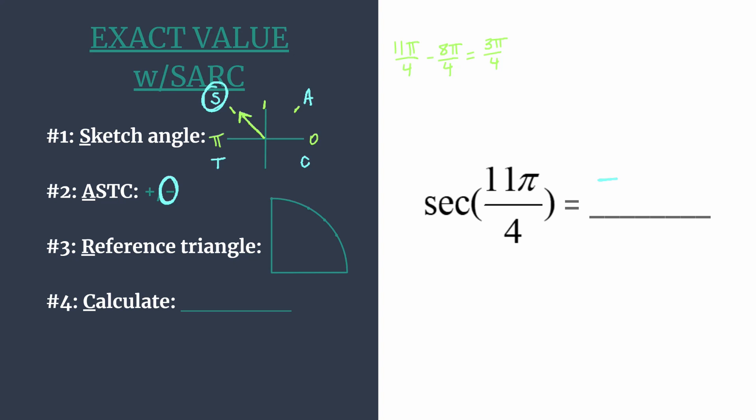Now let's find our reference triangle and coordinates. A reference angle is simply the amount of rotation from your terminal side of your angle to the x-axis. Here we had 3π over 4 was the coterminal angle. If you rewrite π as 4π over 4, it's really easy to see then that you rotate 1π over 4 and that's your reference angle.